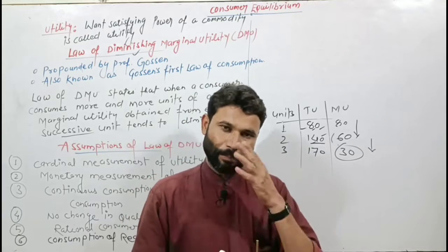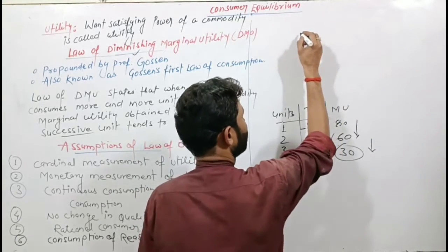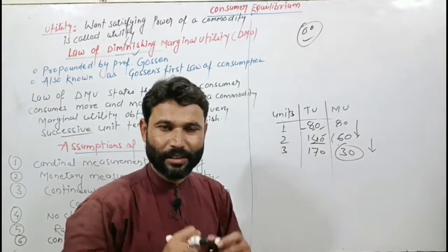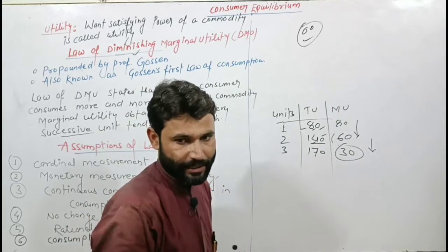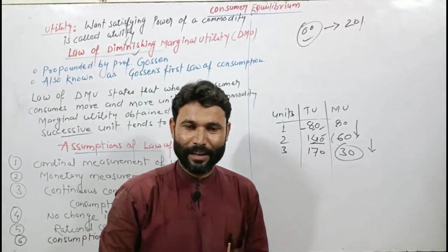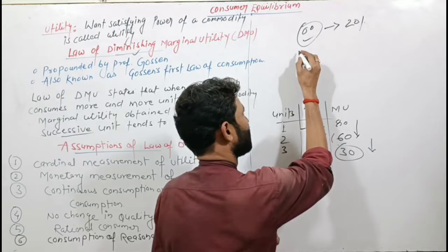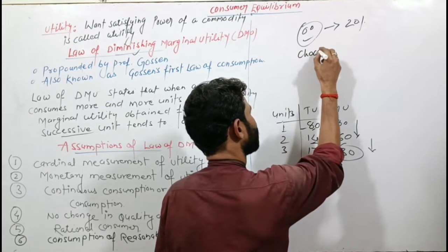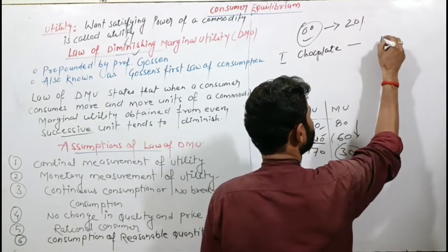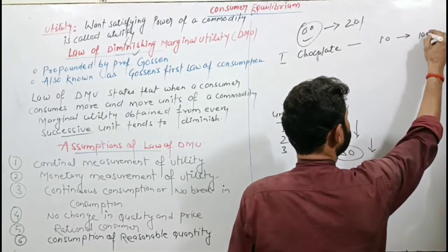Now let's take a price example with Mr. Chikki. His mother gave him 20 rupees. He went to the shop and asked for chocolate. The shopkeeper gave him the first chocolate for 10 rupees, and Mr. Chikki got 100 utils of satisfaction.